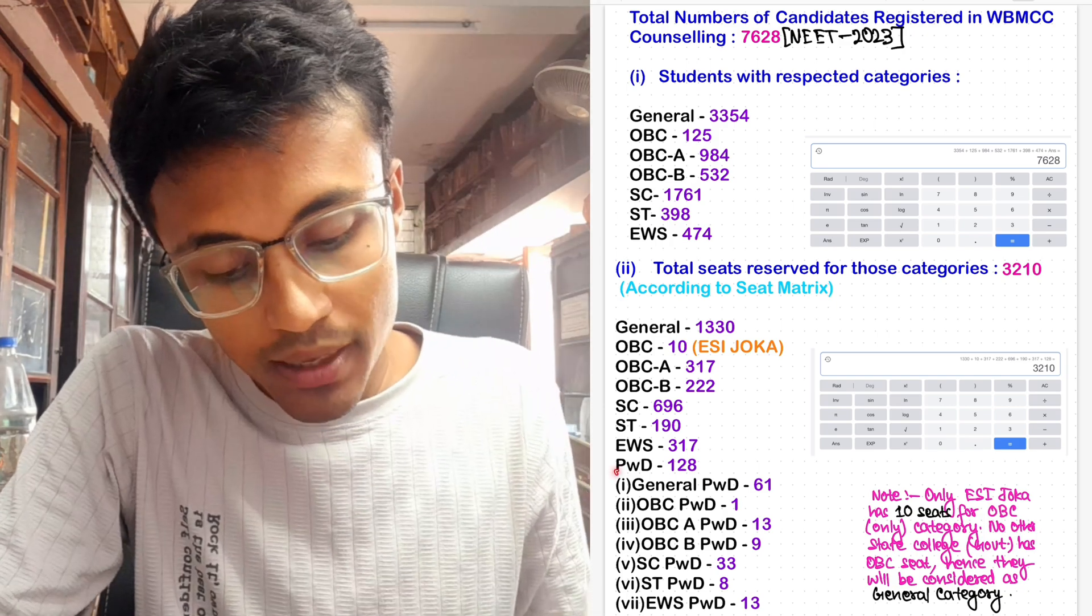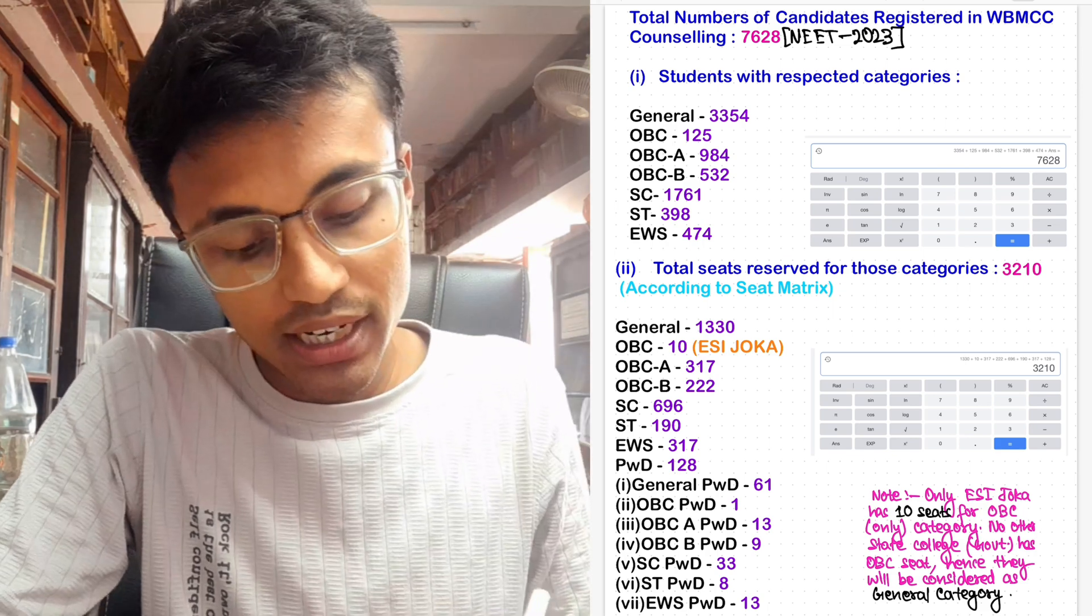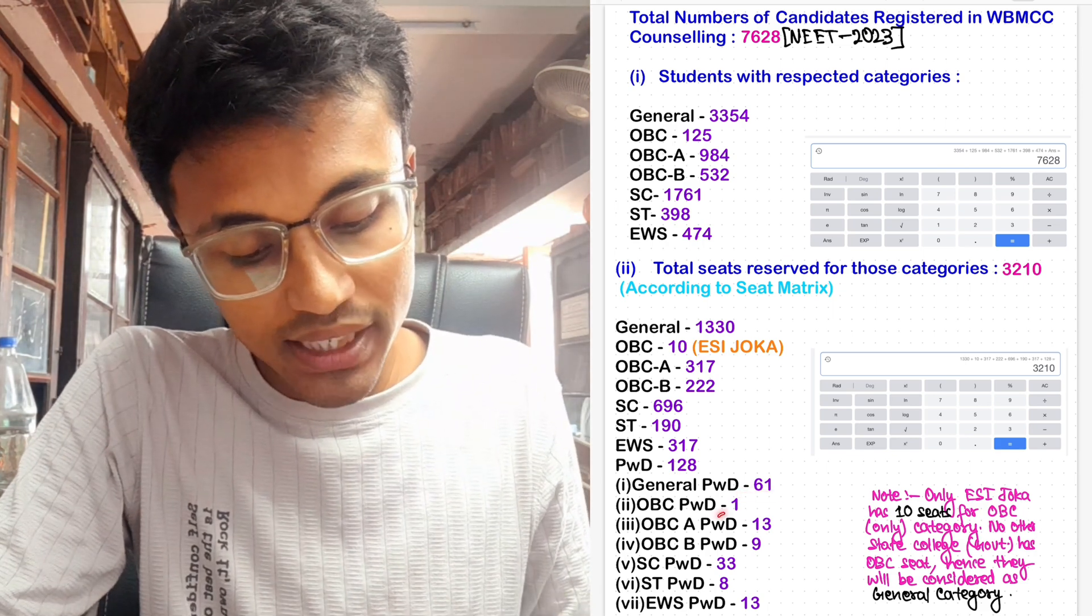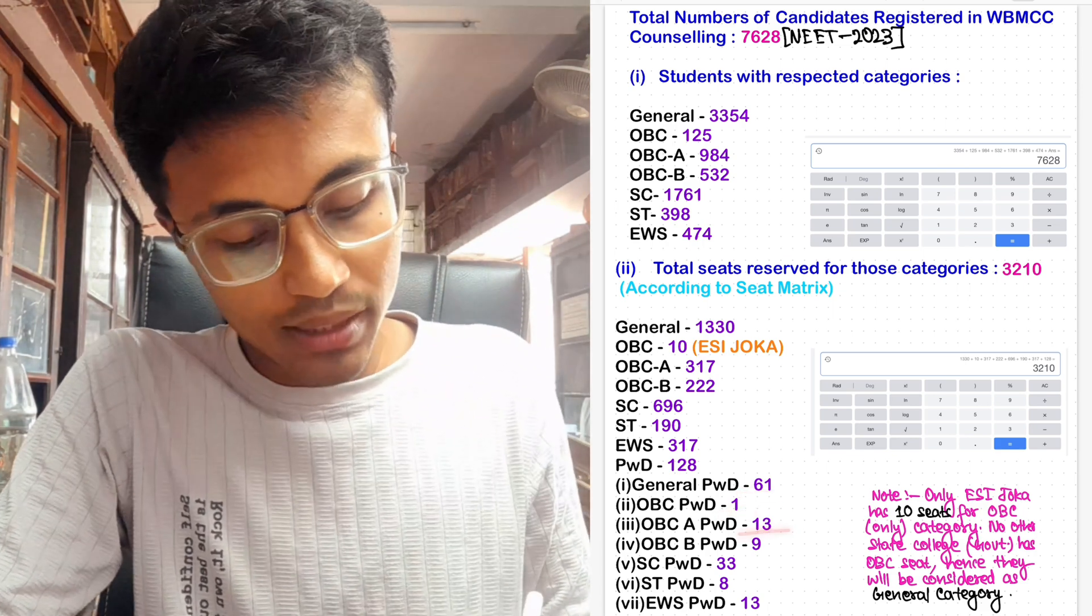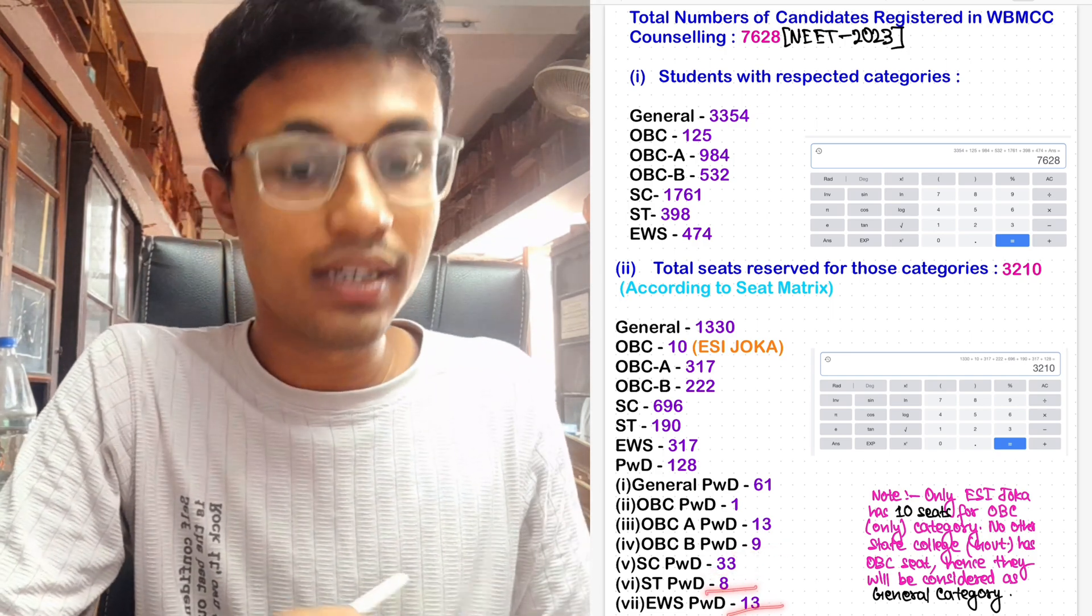Now under PWD candidates, there are varieties in respective categories: General PWD is 61, OBC is 1, OBC-A is 13, OBC-B is 9, SC PWD is 33, ST PWD is 8, and EWS is 13.